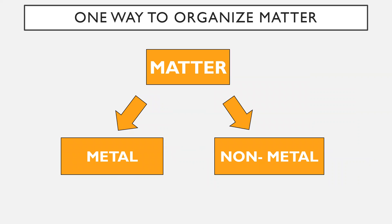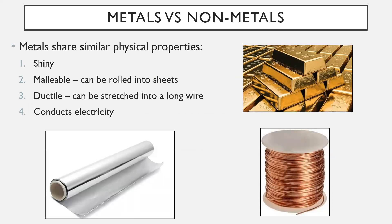Another way to organize matter is into metals versus non-metals. While it seems like a simple distinction, it's actually really important because metals and non-metals can be used to form different kinds of compounds, which we'll get into later. This will become a lot more important as the unit goes on. Another reason this distinction matters is that metals actually share similar physical properties.